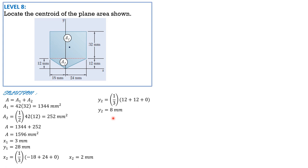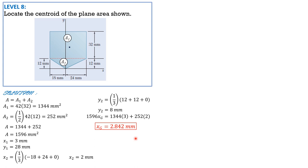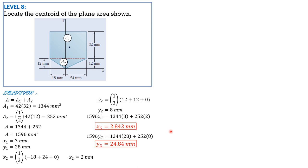Applying Varignon's theorem: 1,596 times x_G equals 1,344 times 3 plus 252 times 2, so x_G equals 2.842 mm. Likewise, 1,596 times y_G equals 1,344 times 28 plus 252 times 8. So y_G equals 24.84 mm. That's it for this problem.